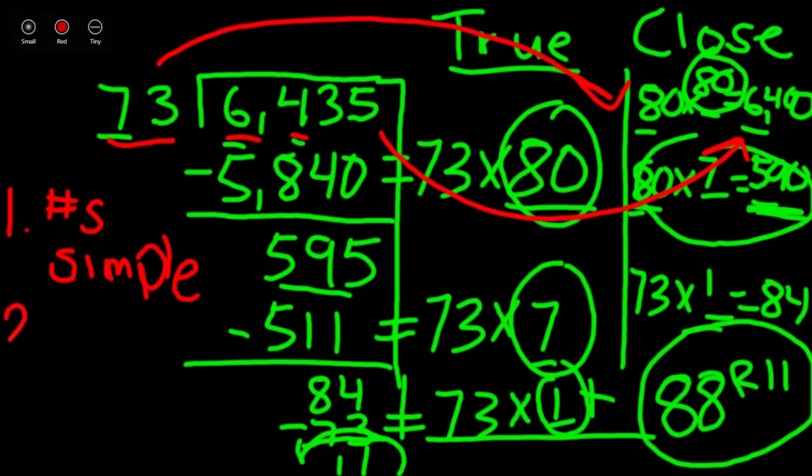The next thing we did is we turned it into a multiplication problem. We said 80 times what equals 6400 here. Just the same, you could say 73 times what equals 6400.